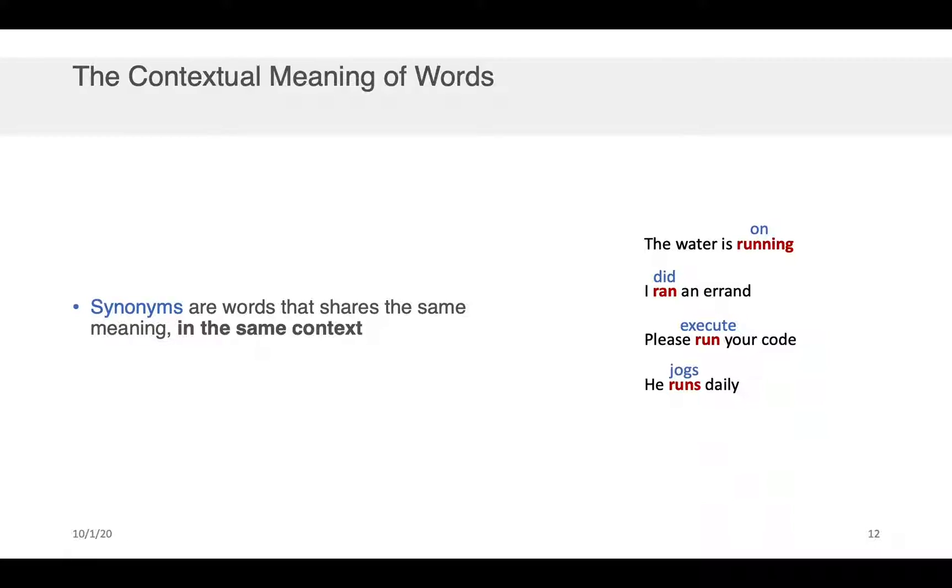So you can see that what we consider to be the nearest neighbor of the word or lemma run, let's say across all these cases, is highly dependent on the context in which we see the word appear. And obviously the same goes for antonyms or what we consider to be the opposite of the word.